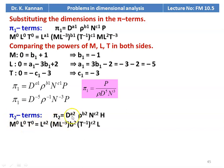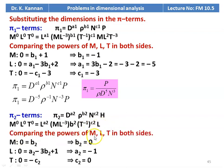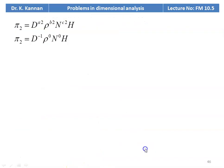For pi2: d^a2 · rho^b2 · n^c2 · h. Substituting dimensions: M⁰L⁰T⁰ = L^a2 · (ML⁻³)^b2 · (T⁻¹)^c2 · L. Comparing: b2 = 0, a2 = −1, c2 = 0. Therefore pi2 = d⁻¹ · rho⁰ · n⁰ · h, giving pi2 = h / d.